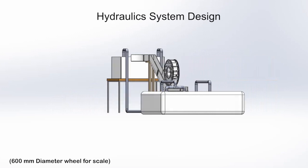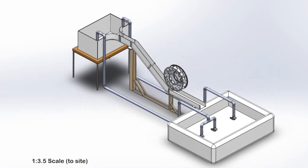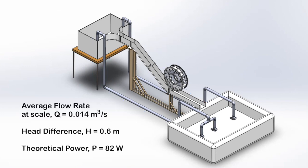A hydraulic system was designed as a scaled version of the specific site in Peshawar. The model has a head difference of 0.6 meters and a flow volume of 0.014, as can be seen in the picture on the screen.